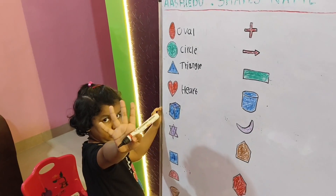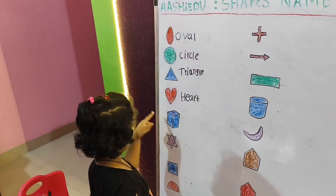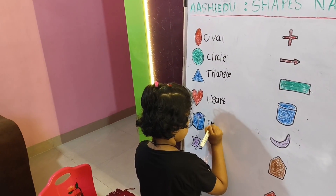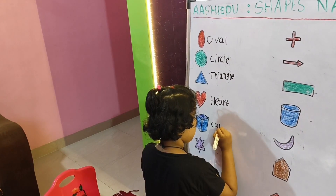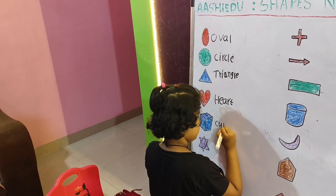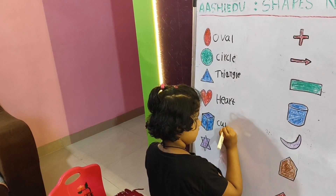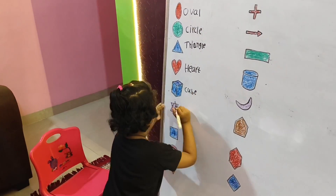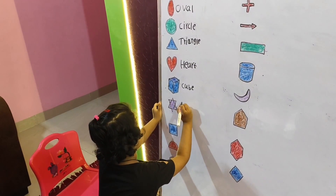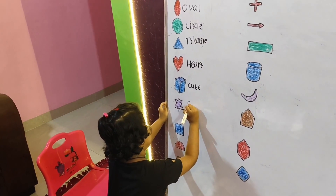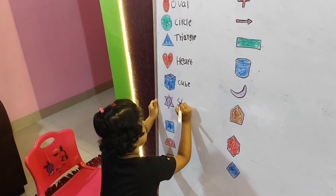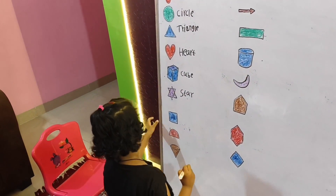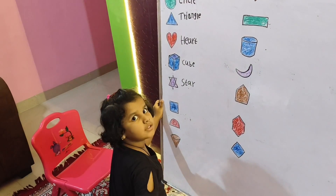And this one will be the cube. C-U-B-E. Cube. Star. S-T-A-R. The square is my favorite.